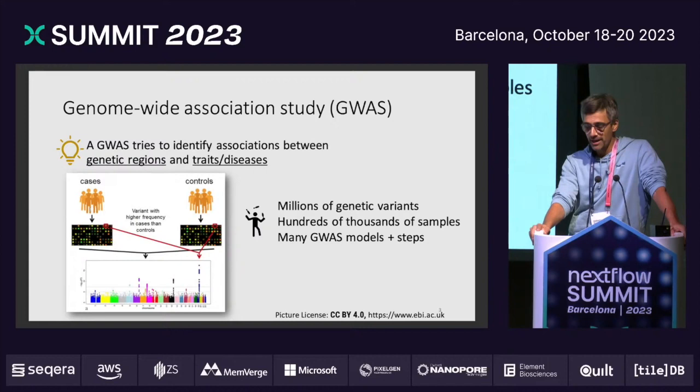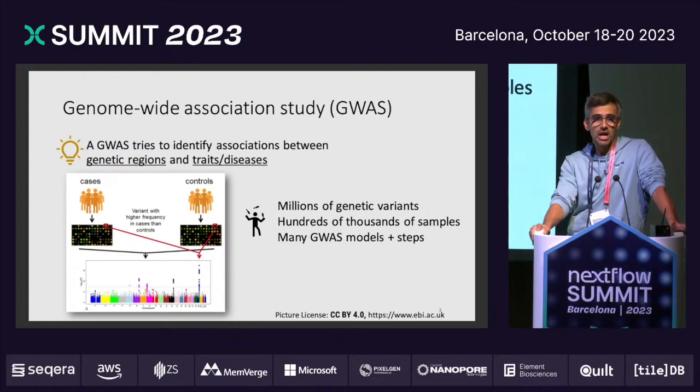You normally get a signal. This colorful picture is a so-called Manhattan plot, where you see on the x-axis the chromosomes and on the y-axis a p-value. As you can imagine, the data gets bigger and bigger. The largest GWAS currently has over five million people included — it's the GIANT consortium — and many thousands, millions of variants, and of course different GWAS models and steps included.